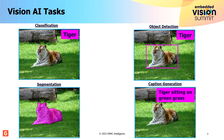Most of you are familiar with the vision AI tasks shown on this slide. These range from classification to object detection to segmentation to caption generation. What is common across these tasks is that the input is always a visual input or an image, and the output depends upon the task at hand.